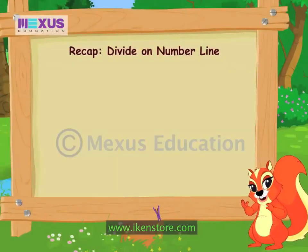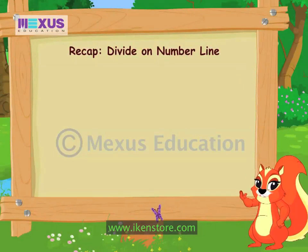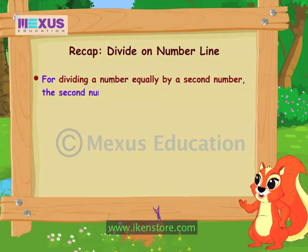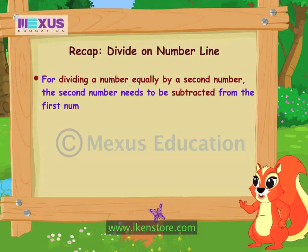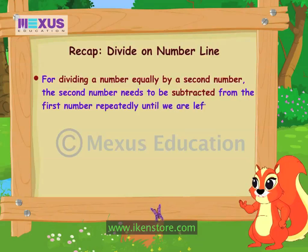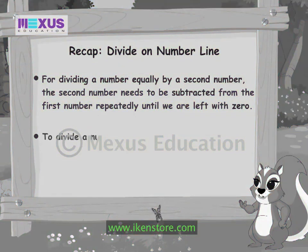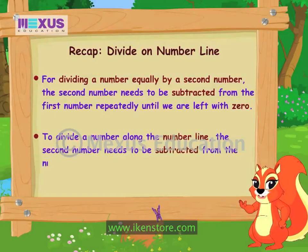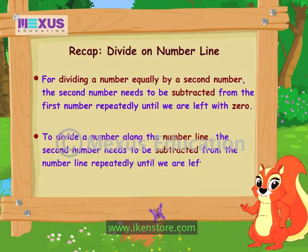Hi, friends. Here's a quick recap. For dividing a number equally by a second number, the second number needs to be subtracted from the first number repeatedly until we are left with zero. To divide a number along the number line, the second number needs to be subtracted from the number line repeatedly until we are left with zero.